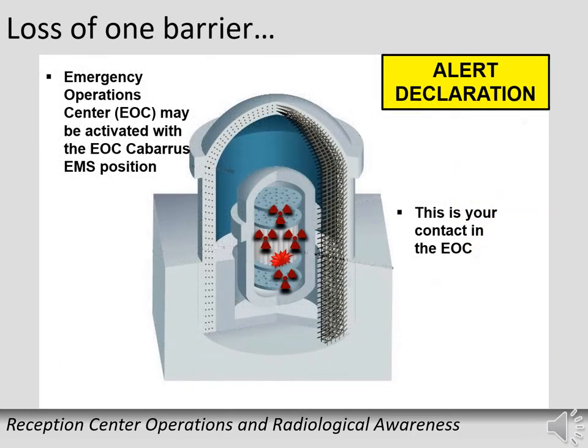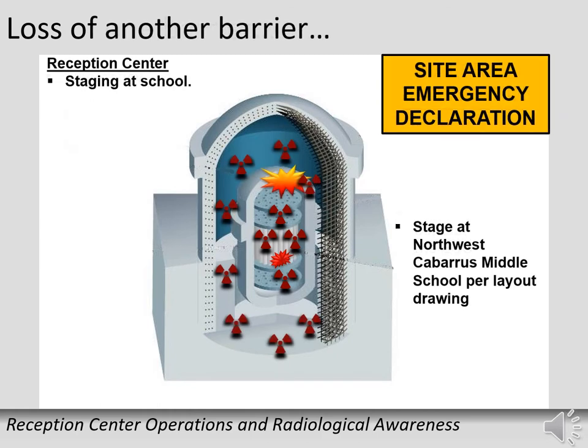At an alert declaration, the EOC EMS lead may respond to the Emergency Operations Center as your contact position if conditions warrant. If two barriers are lost, a site area emergency will be declared. Equipment and item retrieval, delivery, and school setup will occur at this level.